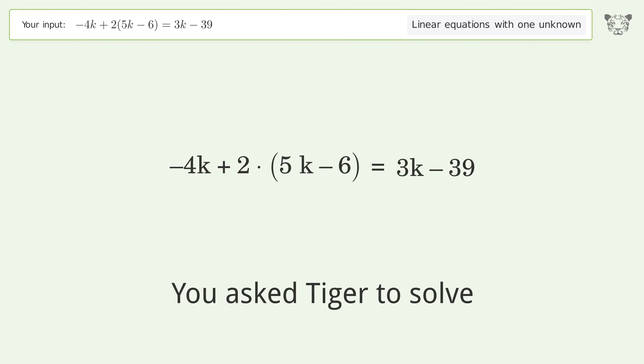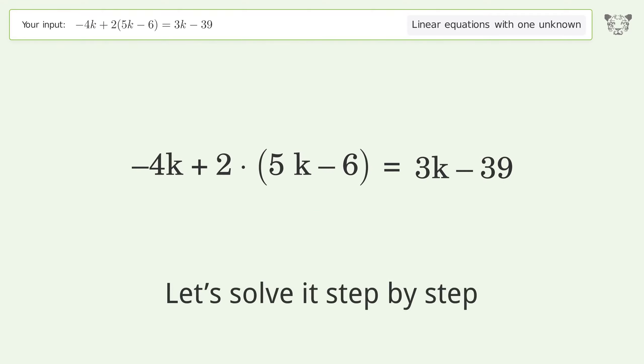You asked Tiger to solve this. This deals with linear equations with one unknown. The final result is k equals negative 9. Let's solve it step by step. Simplify the expression.